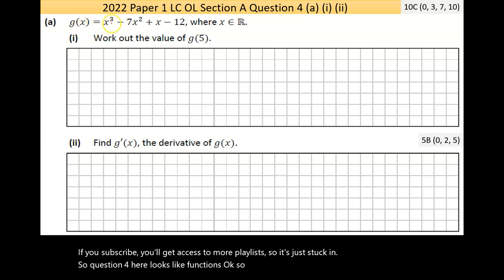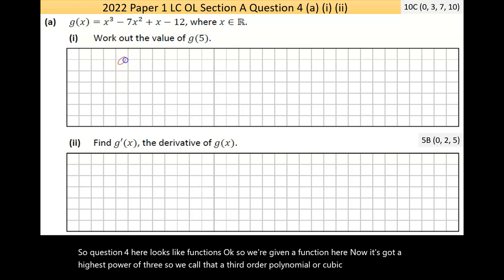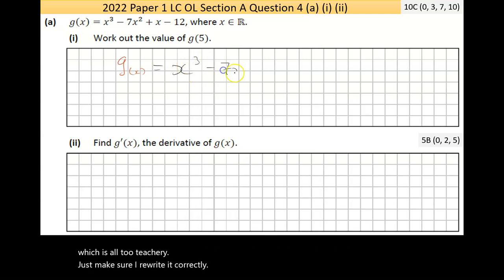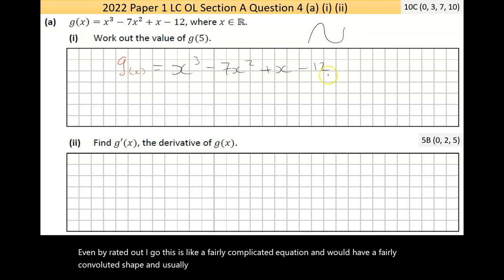Question four here looks like functions. We're given a function here. Now, it's got a highest power of three, so we call that a third-order polynomial or cubic equation. So I'm going to write it out just to get myself started. Even by writing it out, I go, this is a fairly complicated equation and would have a fairly convoluted shape. Usually cubics look something along the lines of that, going up with a lot of change.